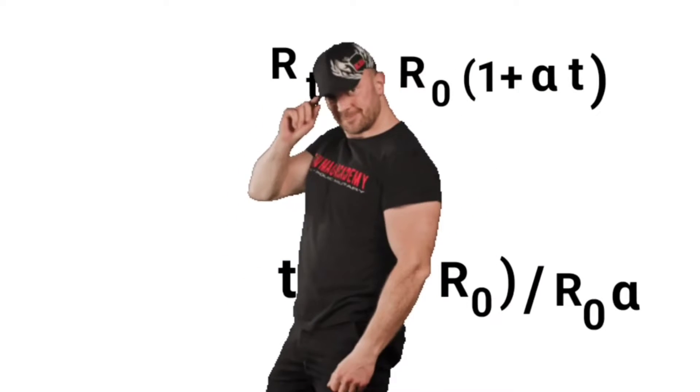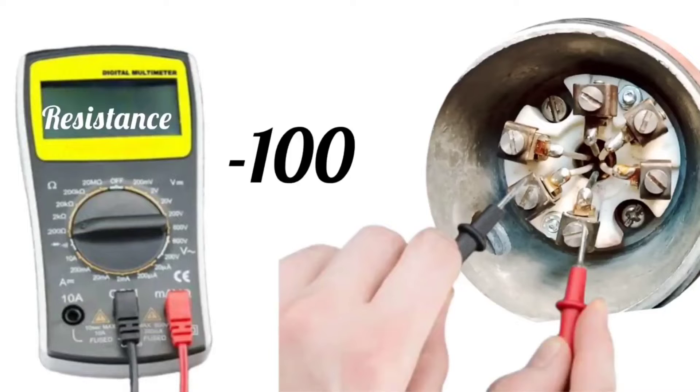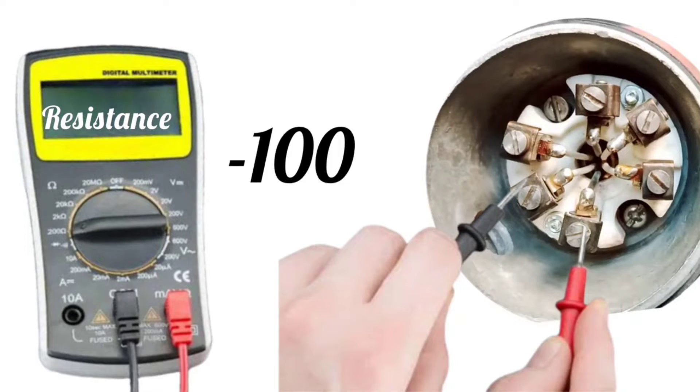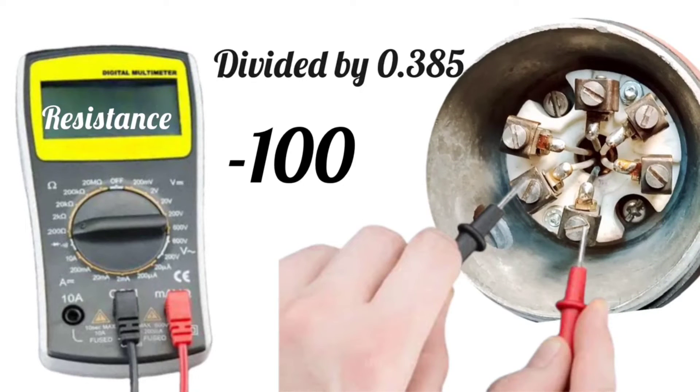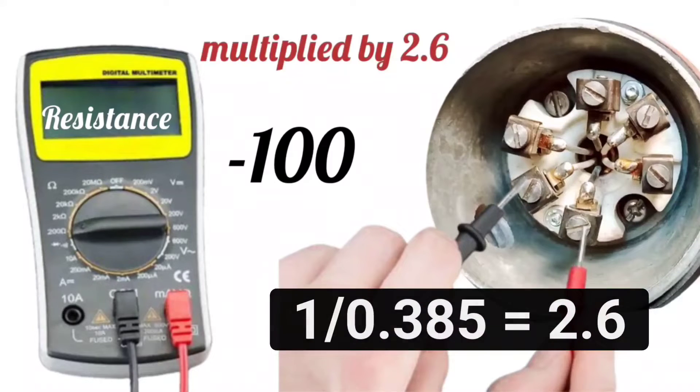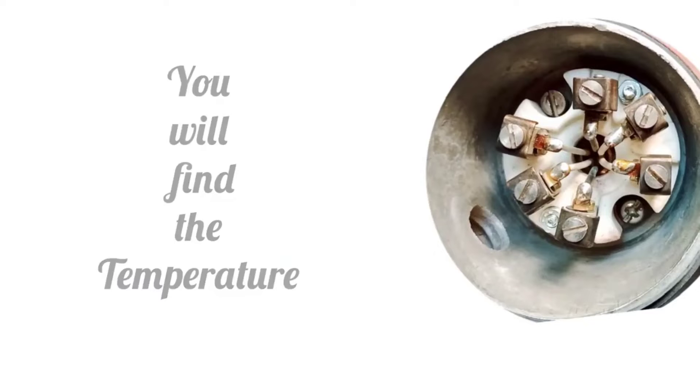Let us now understand the formula in easy language. As much resistance is being shown in the multimeter, minus 100 has to be done, and that has to be divided by 0.385 or multiply by 2.6. You will find the temperature.